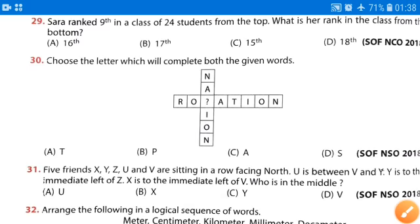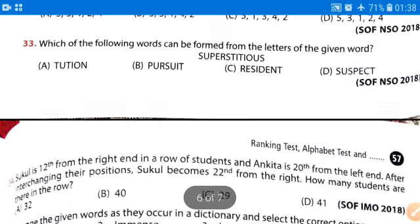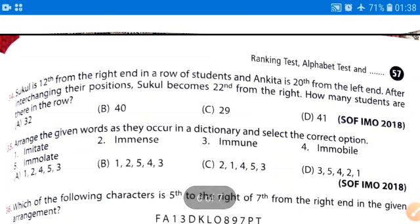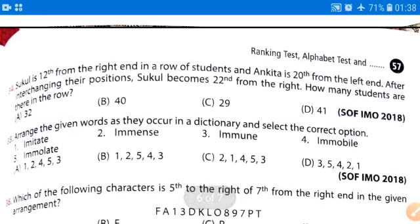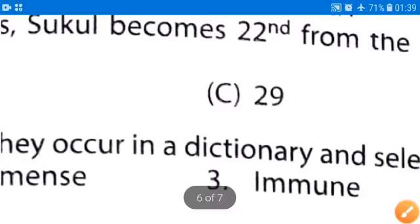Now moving further to the next question, that is question number 34. Sukul is 12th from the right hand in a row of students and Ankita is 20th from the left hand. There are two students Sukul and Ankita. Just a minute and I make diagram.